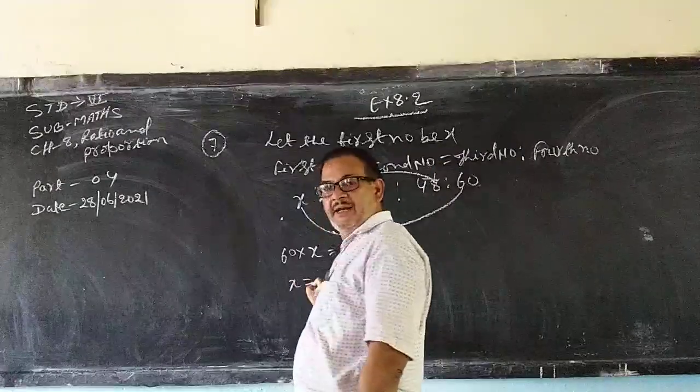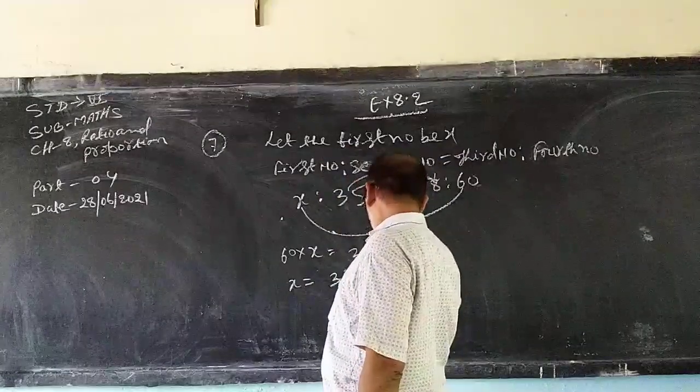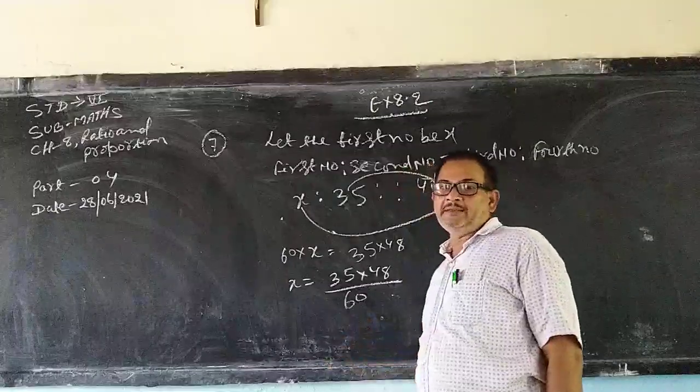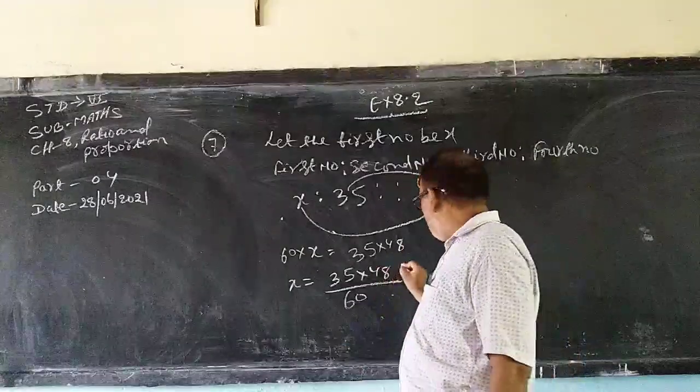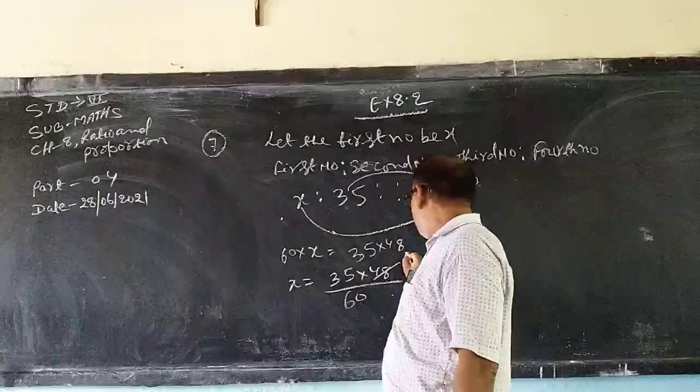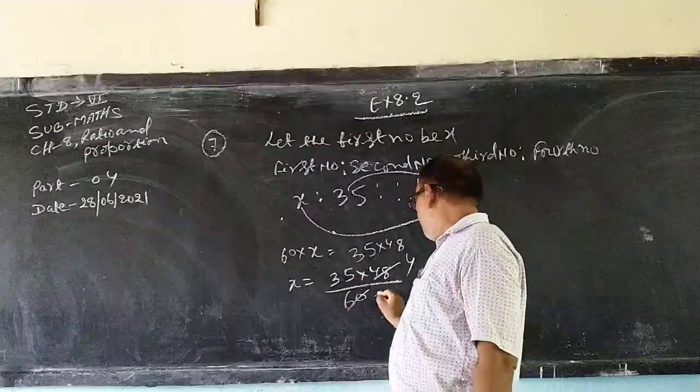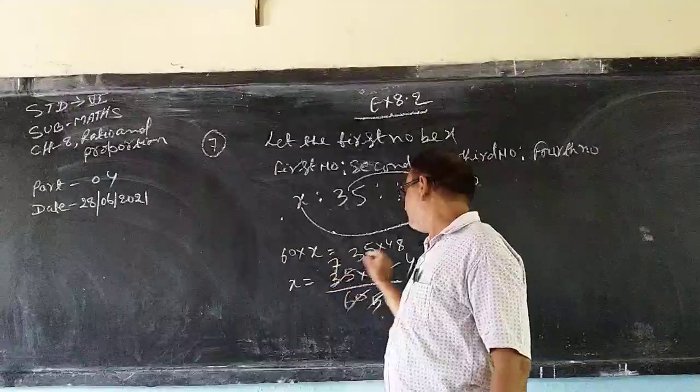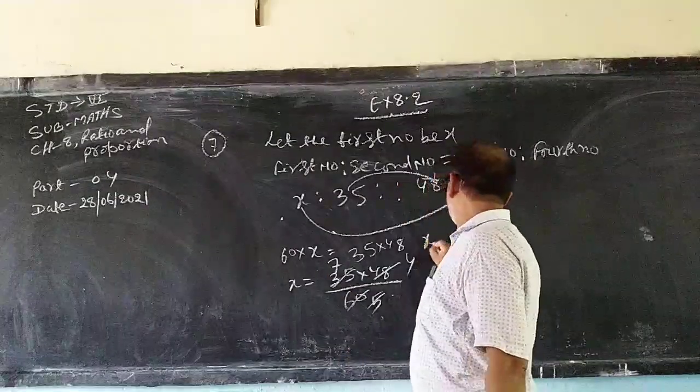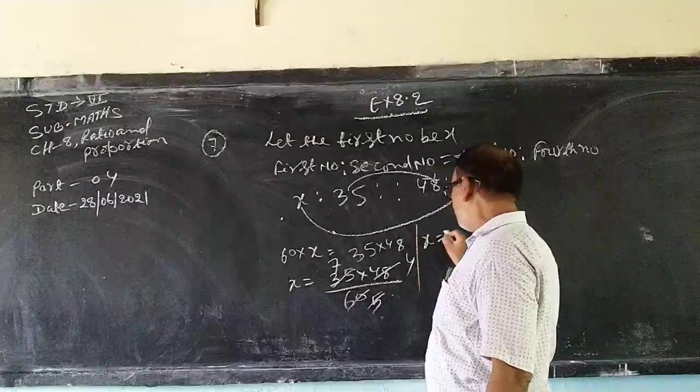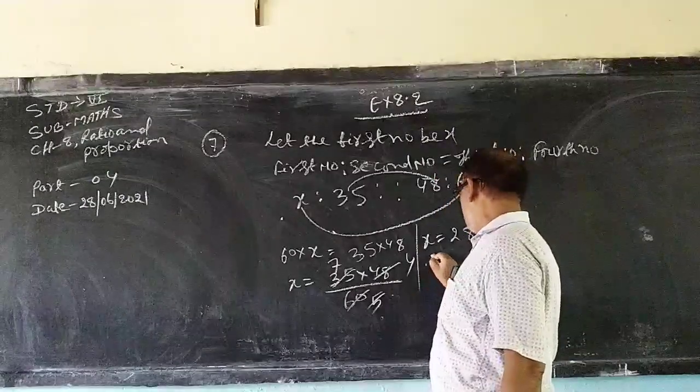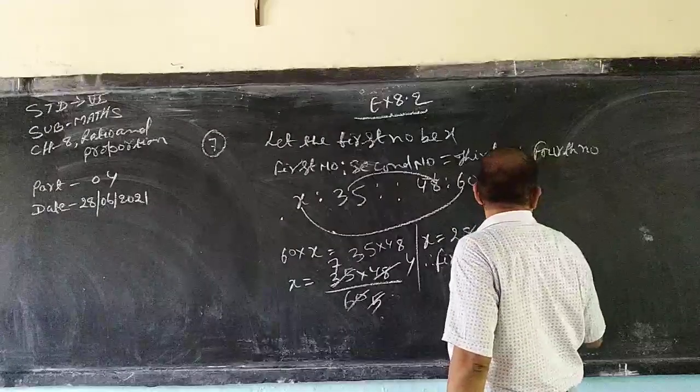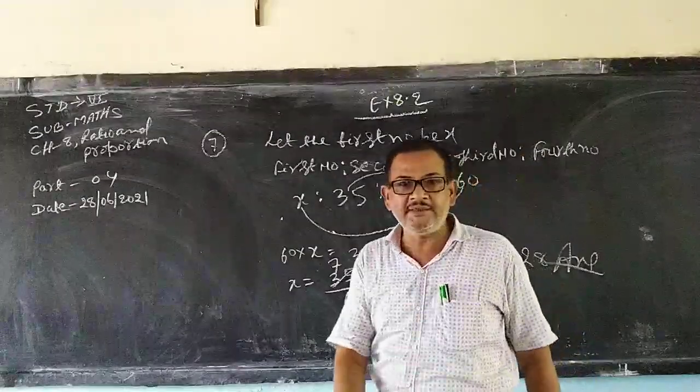So now x is equal to, what to write, 35 by 48 by 60. See this one, both the numbers 48 and 60, both are divisible by 12. So 12 if you divide by 48, 4 will come. This will come 5. Again 35 is divisible by 5, so 7 times. Now x is equal to 7 into 4, that is 28. Therefore, first number is equal to 28.